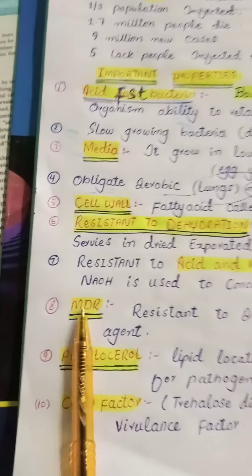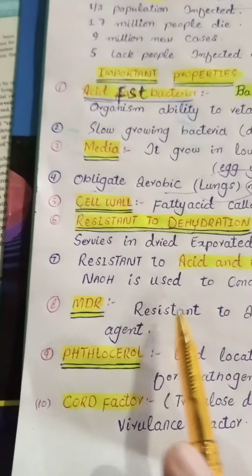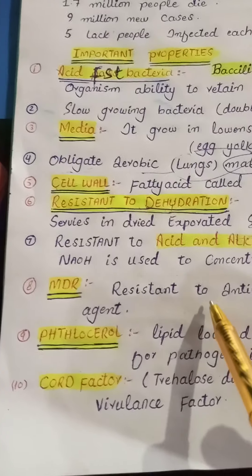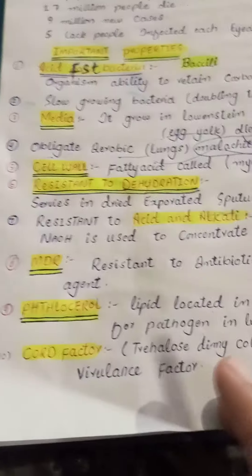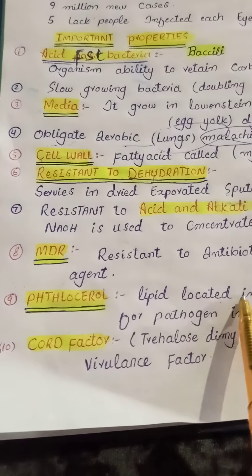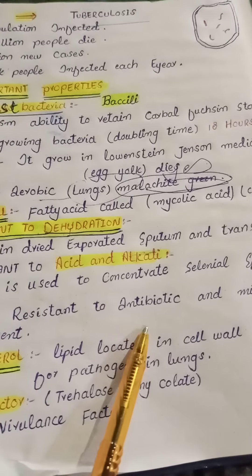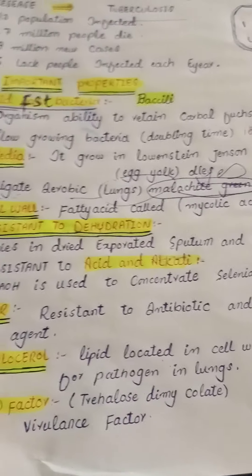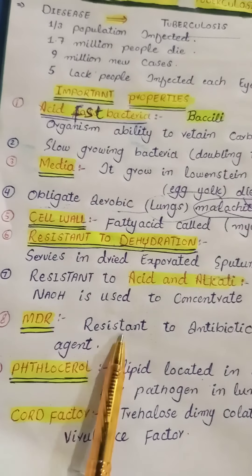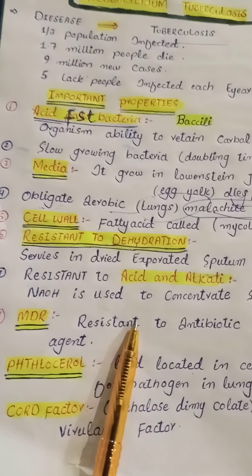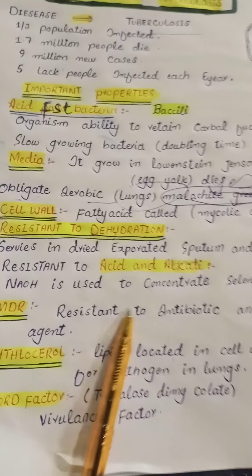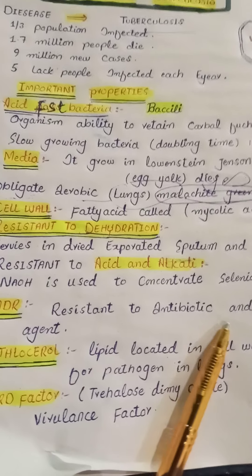What is MDR? Multi-drug resistant. Multi-drug resistant means those Mycobacterium tuberculosis strains that resist antibiotics and other antimicrobial agents are considered MDR. The resistance is attributed to one or more chromosomal mutations, because no plasmid has been found in this organism.